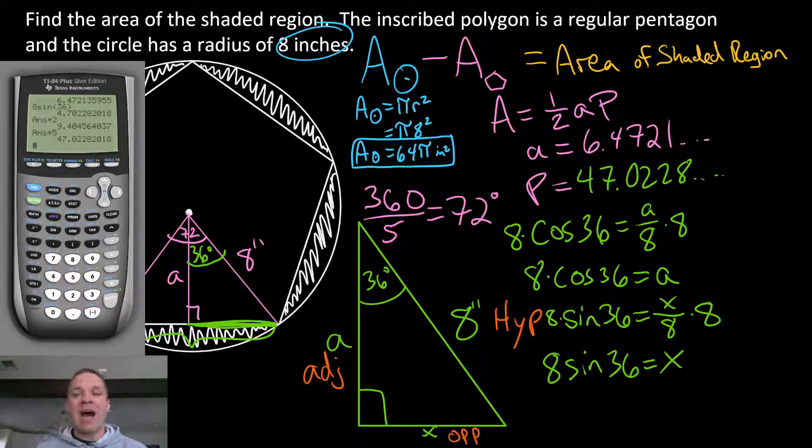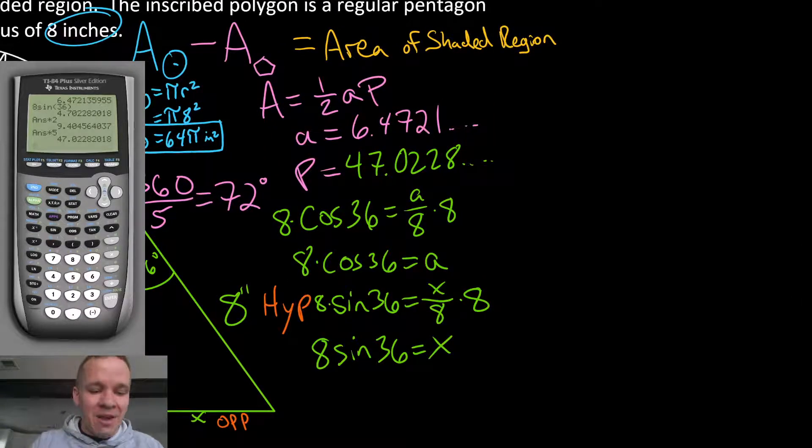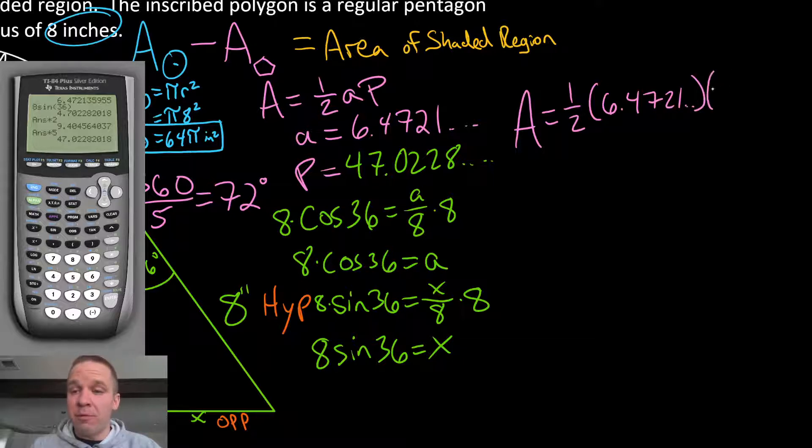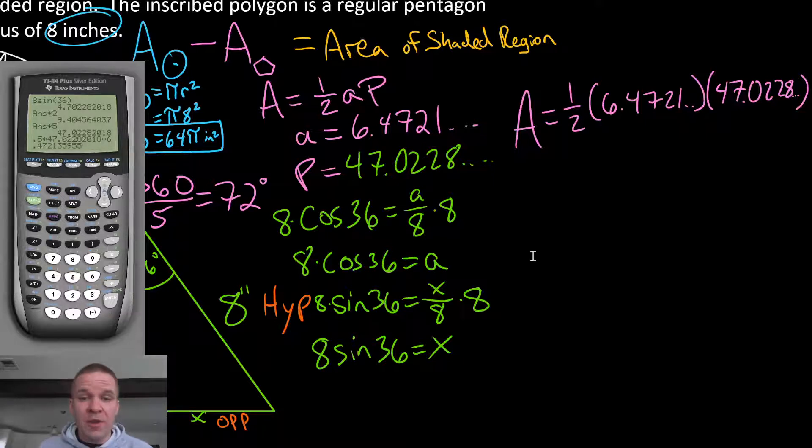So I'm just going to double it, and then I will multiply that guy by the five sides. If you multiply it by 10, that's cool too. I showed it separate. So my perimeter here is 47.0228. Now, I can plug all of this into my formula. So I'm going to have the area is equal to one half, multiplied by my apothem, which is 6.4721 and change, times my perimeter, which is 47.0228 and change. Let's plug that all in.